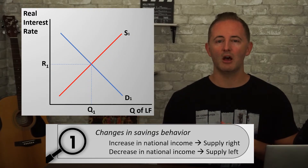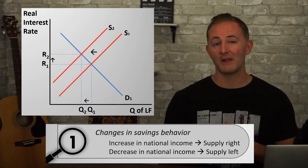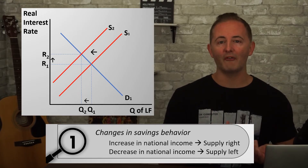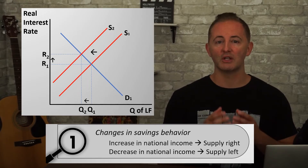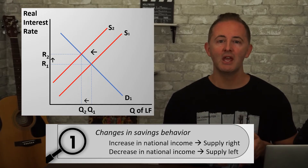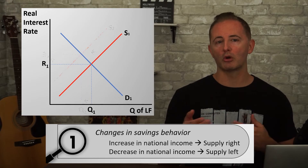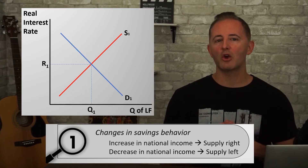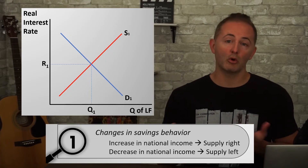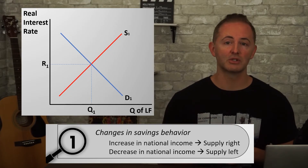A decrease in income would shift the supply curve to the left. Or if people's savings behavior itself changed and they saved more or less, then the curve would shift right or left as a result.